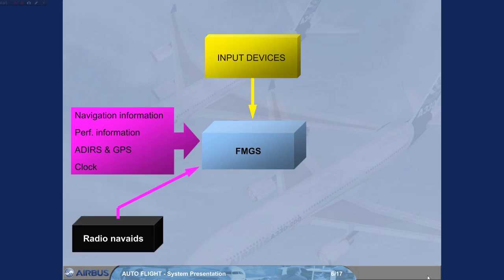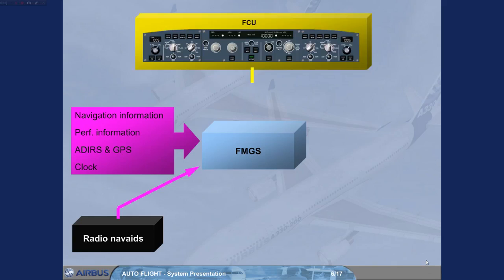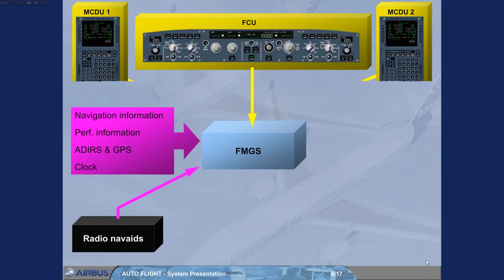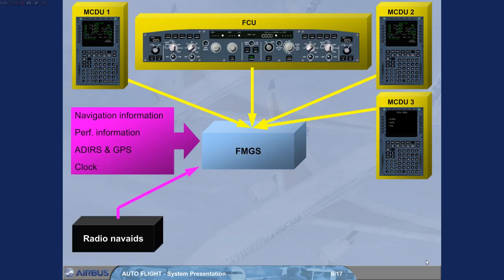The pilots provide inputs to the FMGS using a single Flight Control Unit (FCU) for short-term interventions, and three Multipurpose Control and Display Units (MCDU) for long-term interventions.